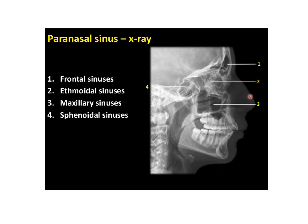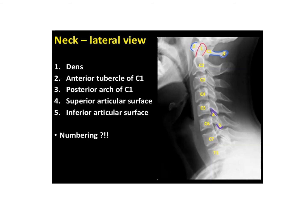In the lateral view of paranasal sinus x-ray, here you get the frontal air sinus, the ethmoidal air sinus, then the maxillary air sinus, and the sphenoid air sinus just below the sella turcica.